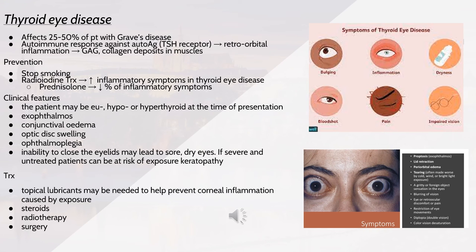Thyroid eye disease affects 25-50% of patients with Graves' disease. It's an autoimmune response against the TSH receptor, leading to retroorbital inflammation with GAGs and collagen deposits in the muscles. Prevention includes stopping smoking; radioiodine treatment increases inflammatory symptoms, so prednisolone can be given to decrease this risk. Clinical features include the patient being eu-, hypo- or hyperthyroid, exophthalmos, conjunctival oedema, optic disc swelling, ophthalmoplegia, and inability to close the eyelids leading to sore dry eyes. If severe and untreated, patients risk exposure keratopathy. Treatment is topical lubricants, steroids, radiotherapy and surgery.